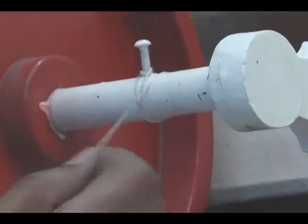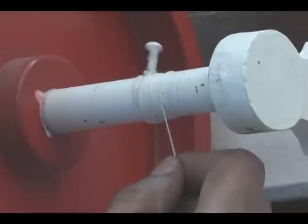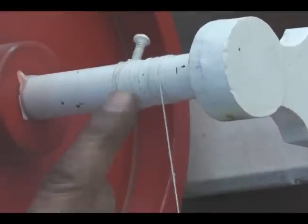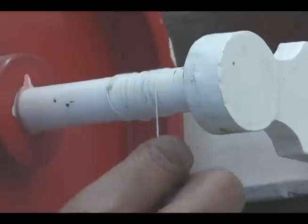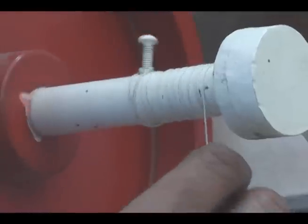Now it should not overlap in this way. It should be uniformly wrapped on this axle. No overlapping. When we make it wrapped, so we should be very careful that it should not overlap.